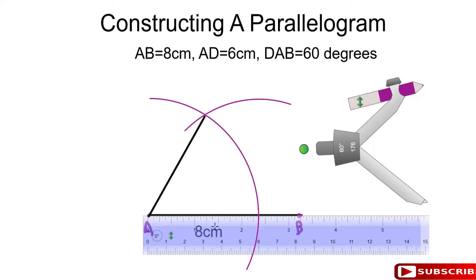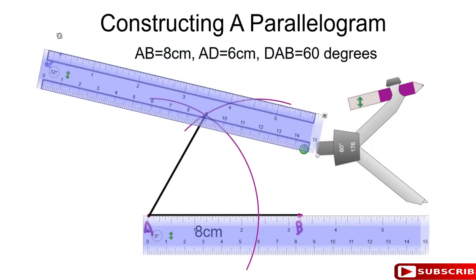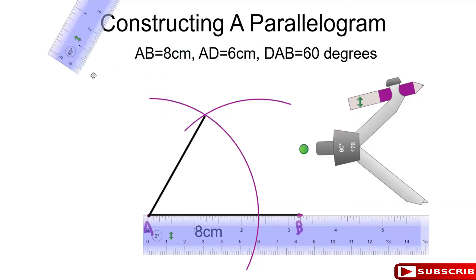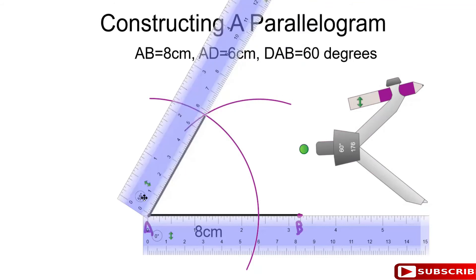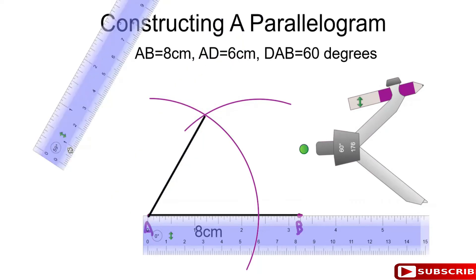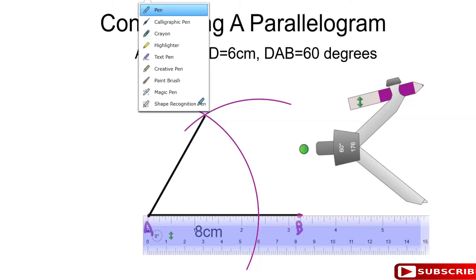If you don't believe it, you can use your ruler and measure it. I'm going to take out another ruler and rotate it 60 degrees. This is approximately 59 — close enough. And this needs to be 6 cm. There it is — it's 6 cm, approximately. So this is 6 cm. Remember, it's angle DAB, so this point up here is D.